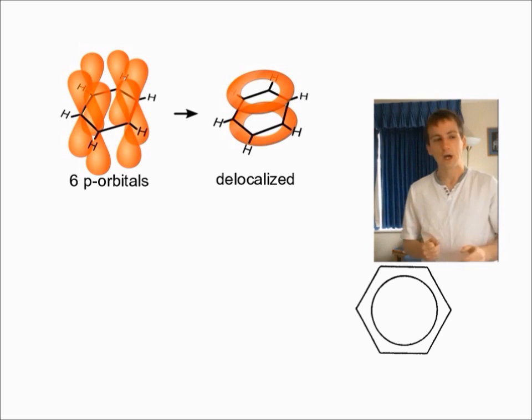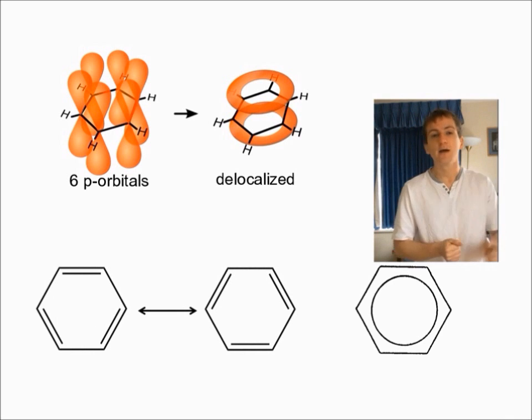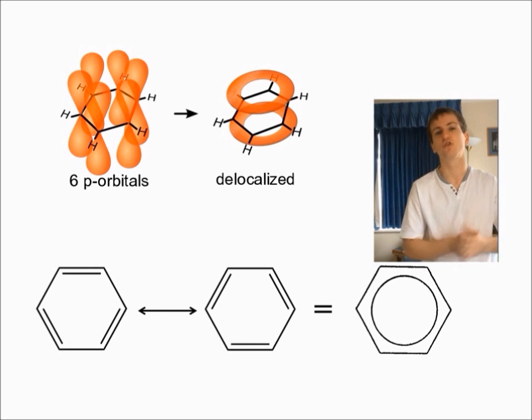We can draw a hexagon with a ring in it, or we can draw two structures connected by a double-headed arrow. And what I mean by the double-headed arrow is that the real structure of benzene has contributions from both of these structures.